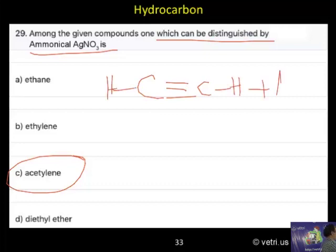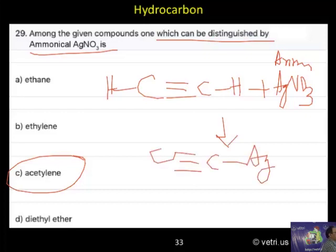When I treat with the ammonical silver nitrate, both hydrogen will be displaced by silver. This white precipitate will form. Silver acetylide will form.